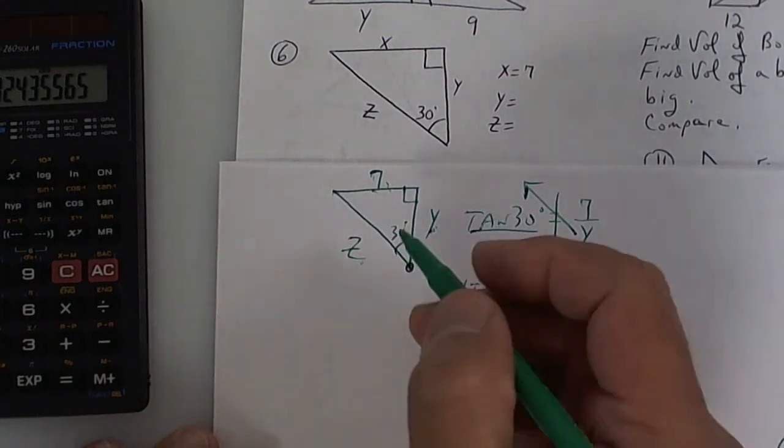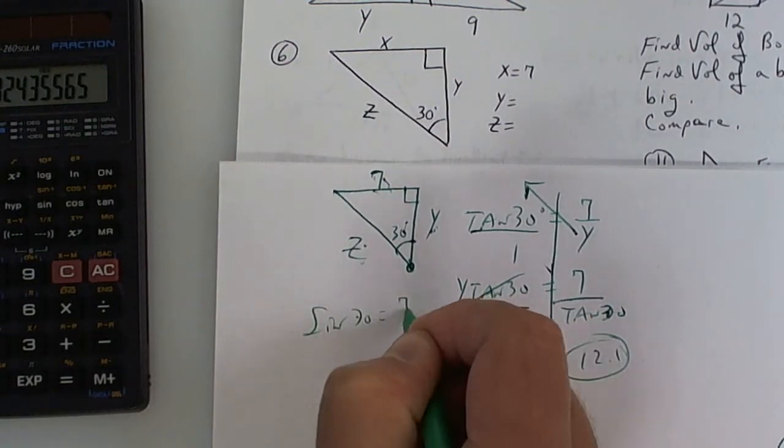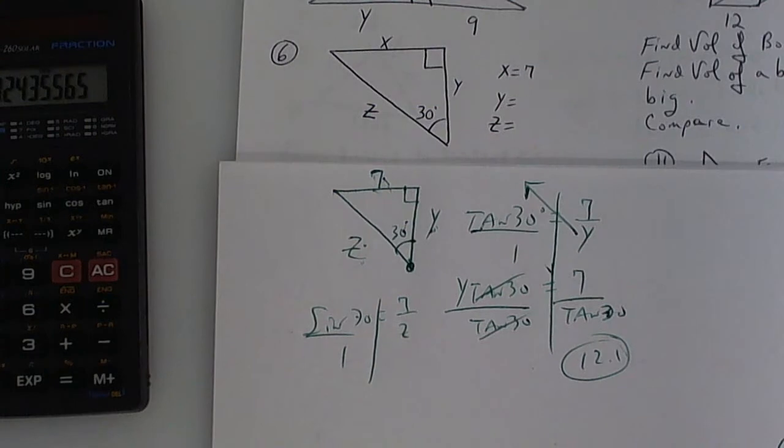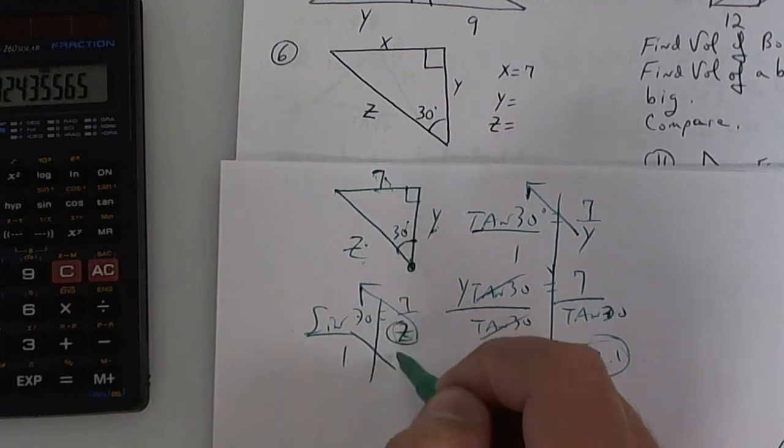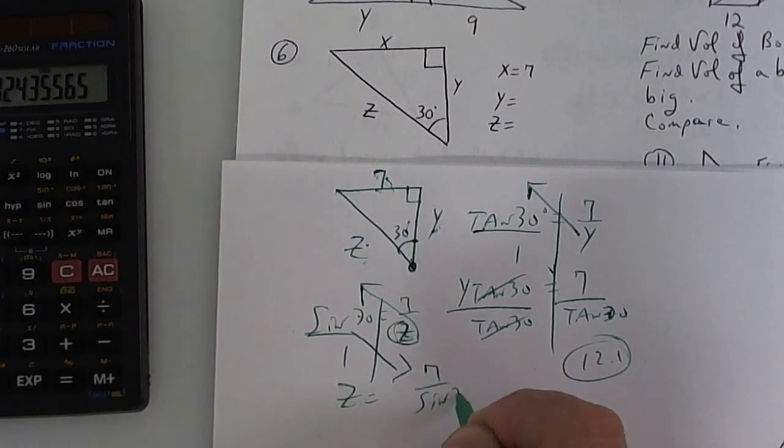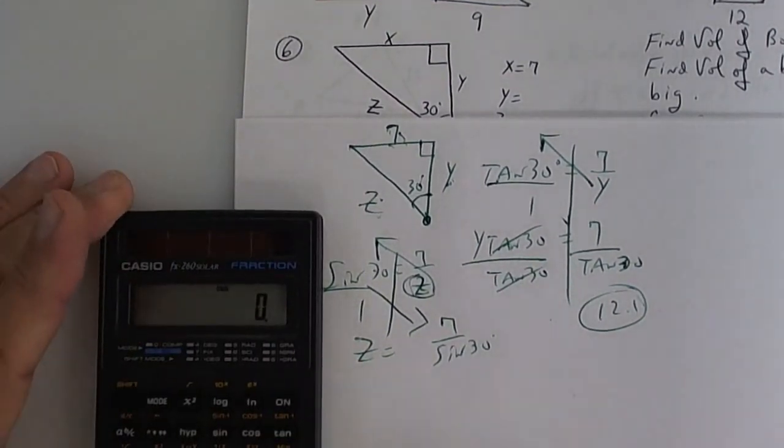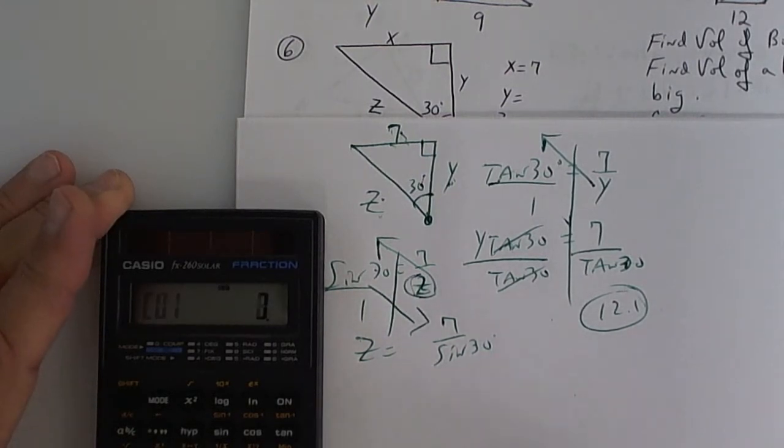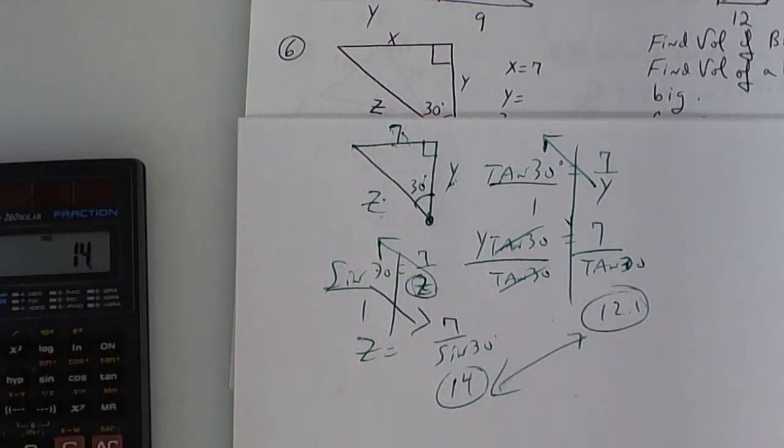And then you've got to do Z. Z is going to be opposite over hypotenuse. That's sine. So that's the sine of 30 degrees equals opposite over hypotenuse. Everybody clear on what I'm saying? You've got to be able to do trig. So switch these two. Your answer is Z equals 7 over the sine of 30. Clear your calculator. Press 7, divide it by open parentheses, 30, and then sine, and then close parentheses. I get 14 for this one. Any questions on how to do the trig?